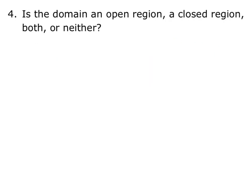Next, we want to look at is the domain an open region, a closed region, both, or neither. Recall that a closed region contains all of the boundary points. An open region contains no boundary points. So the only way a region could be both is if there's no boundary. We'll see an example of this in the last video for this section. The only way that a region could be neither is if it contains some, but not all, of the boundary points.